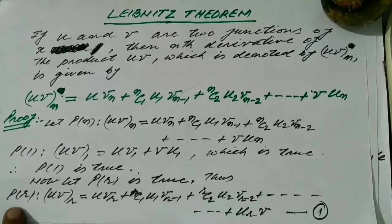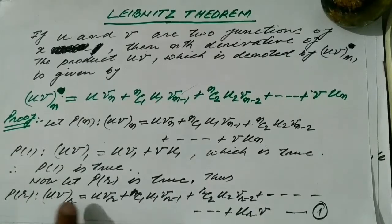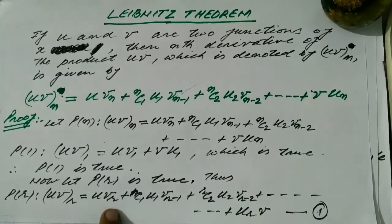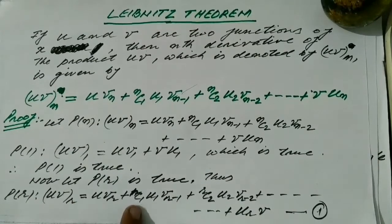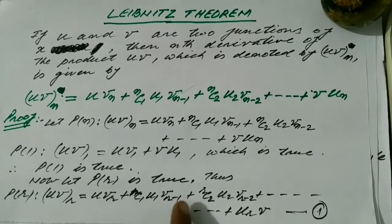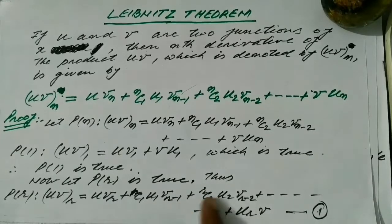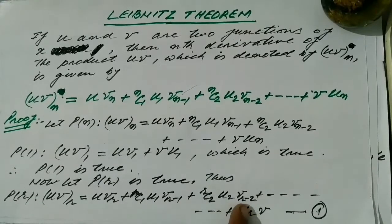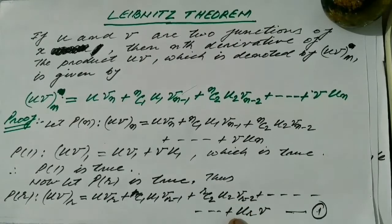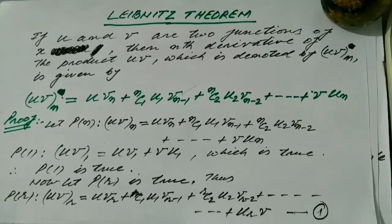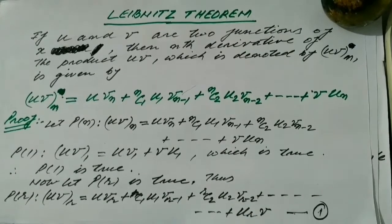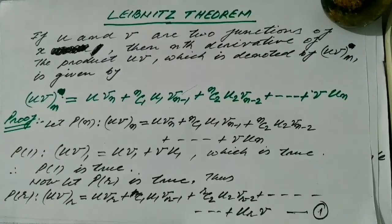Thus P(r) states: (uv)_r = u·v_r + rC1·u1·v_{r-1} + rC2·u2·v_{r-2} + ... + u_r·v. Let this be equation number 1.